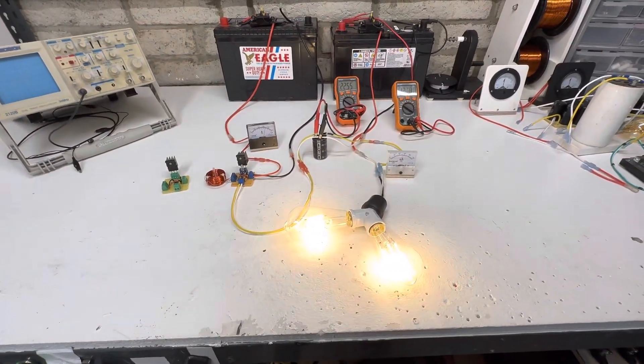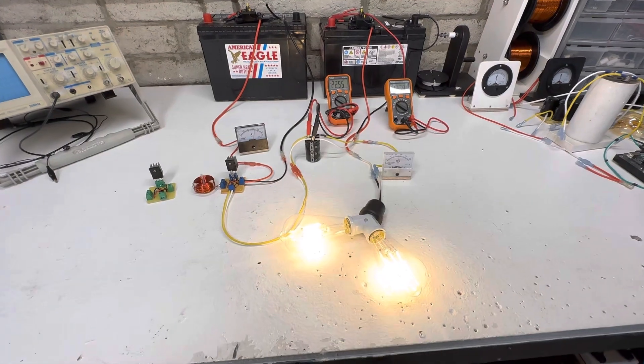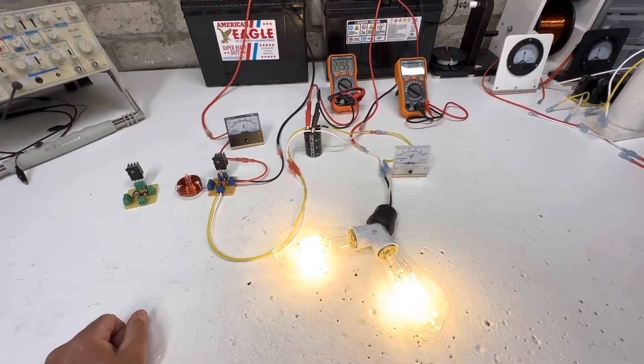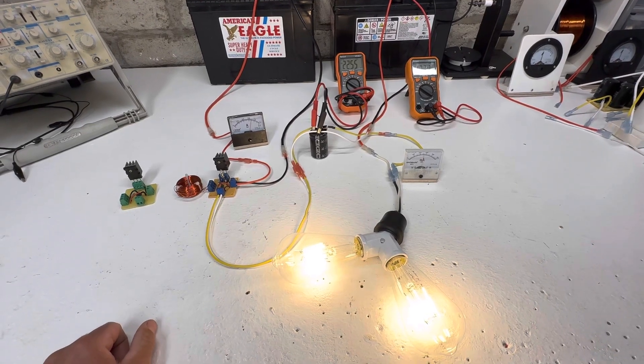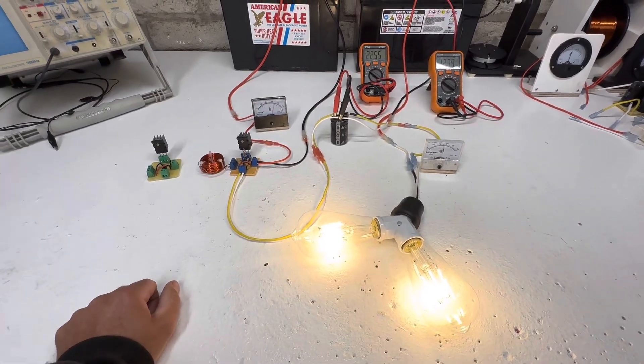So super bright. If you had these lights connected to the battery, you'd be using 1 amp at 12 volts. But this oscillator works pretty well. These are super bright.